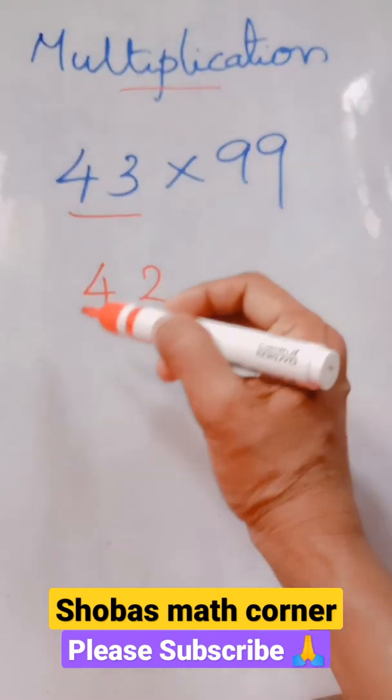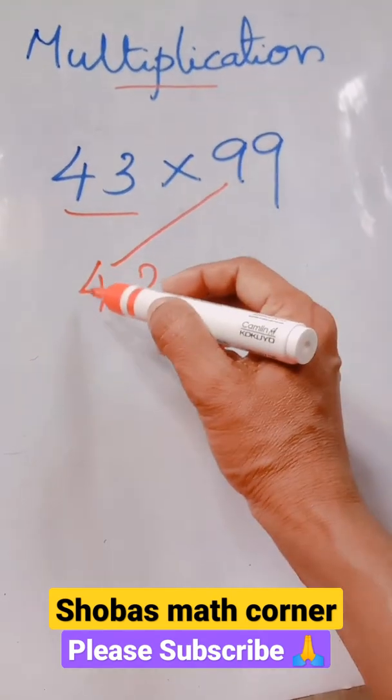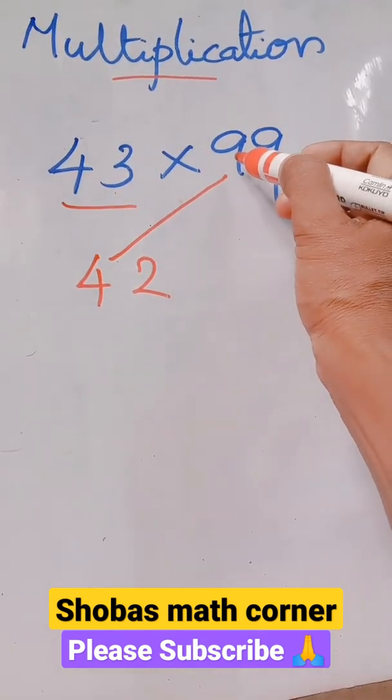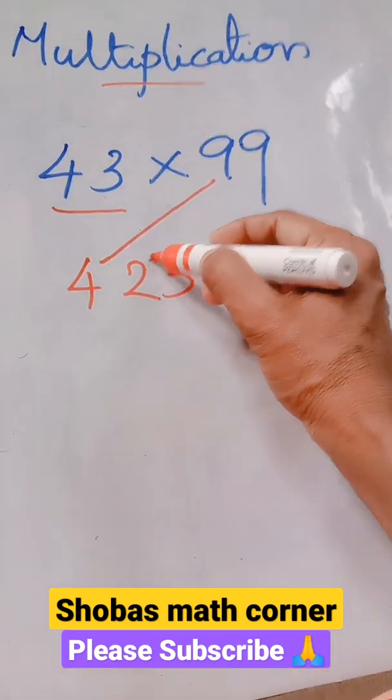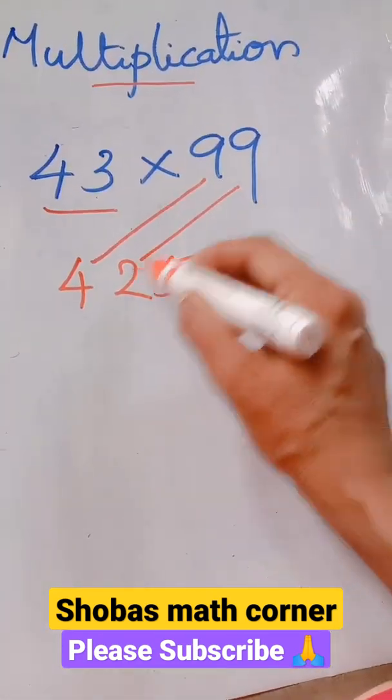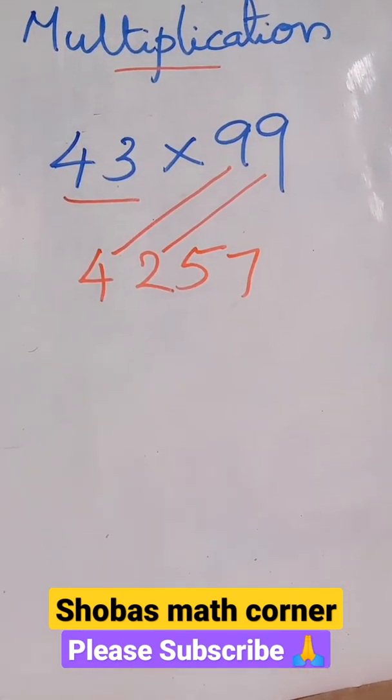Then next step is what should be added to 4 to get 9? 4 with what number? When you are adding, you will be getting 9. 4 plus 5, okay, so it is 5. Then 2 with 9, you have to add 7. So our answer is 4257.